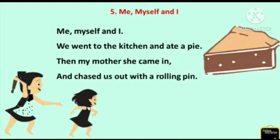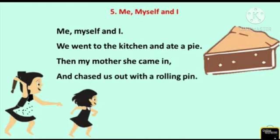So students, let me explain the poem. Me, Myself and I is none other than the character played by the girl in the poem. The girl enters the kitchen and eats the pie without the mother's knowledge. When the mother enters the kitchen, she sees the girl eating the pie. The annoyed mother picks the rolling pin and chases the girl out of the kitchen.